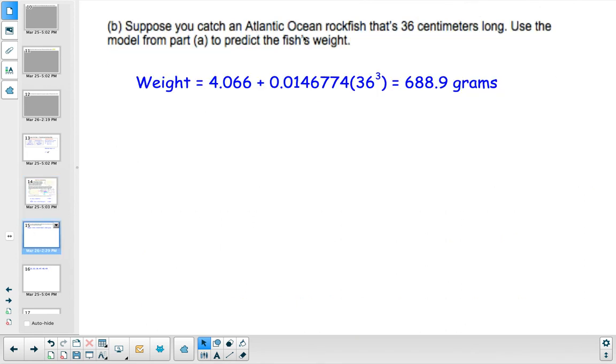Part B: Suppose you catch an Atlantic Ocean rockfish that is 36 centimeters long. Use the model from part A to predict the fish's weight. You'll input 36, which gets cubed first because you're comparing the outputs to the cube of the inputs, and you get a predicted 688.9 grams.